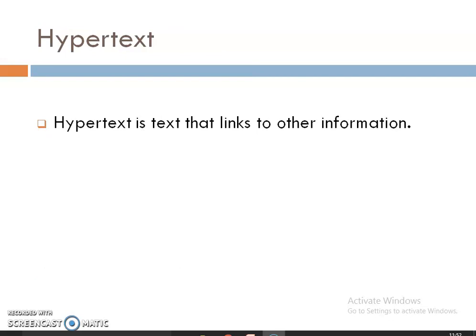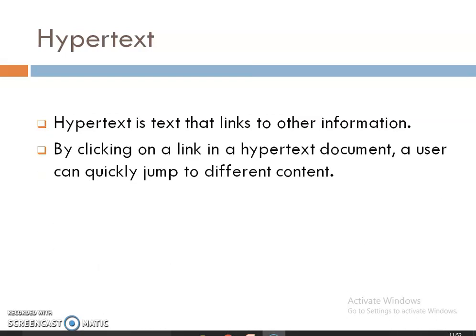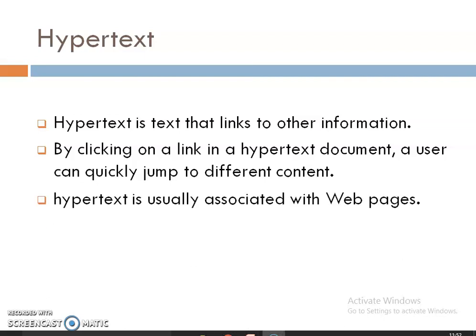A text which refers to a link is known as hypertext. Hypertext is a text that links to other information. When you click on a link, you are actually clicking on hypertext, and that hypertext is associated with the link, so the user can quickly jump to a different page. It is always associated with web pages.